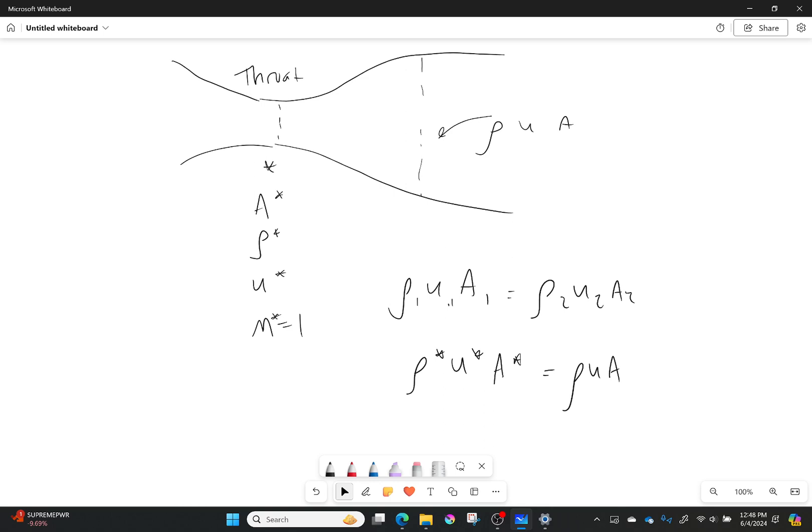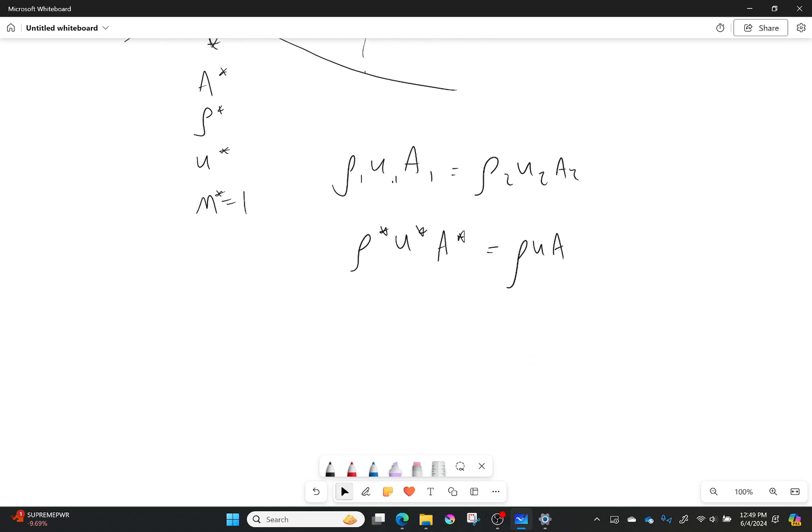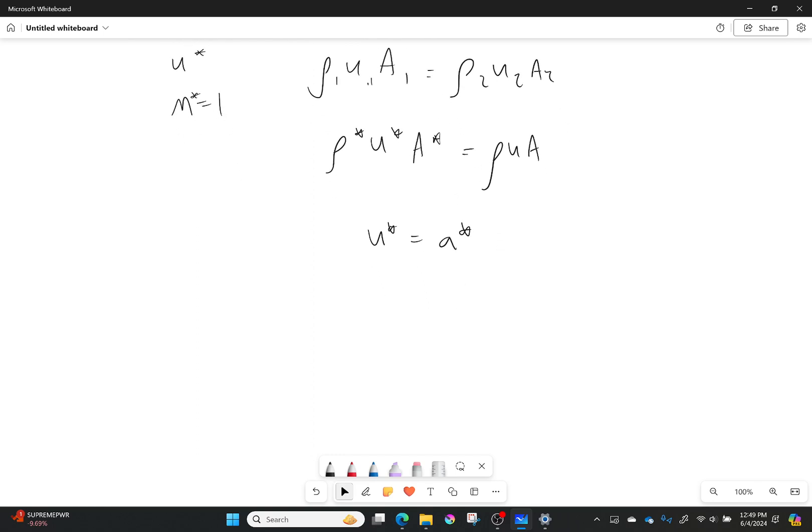Now we can do some interesting things there because first off what we know is that u star is actually equal to a star. I know that and so if I want to I can divide things around. So I'm going to put all the areas in one side I'm going to put all of the rhos and the u's in the other side. So what I would get then is rho star over rho times a star over u is equal to A over A star.